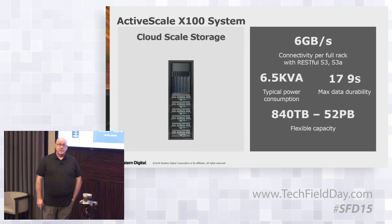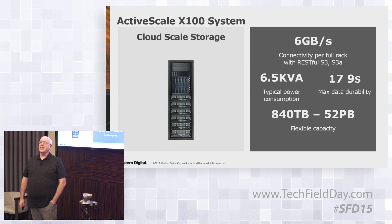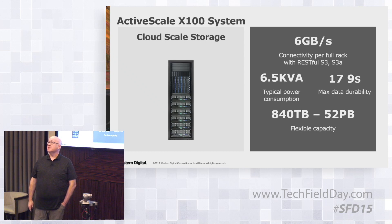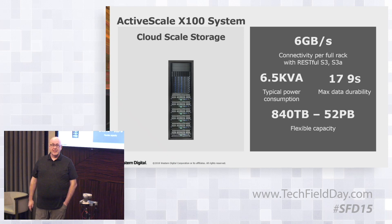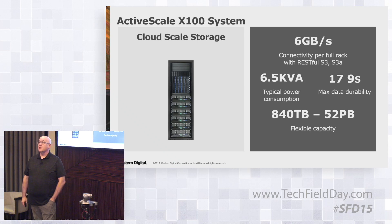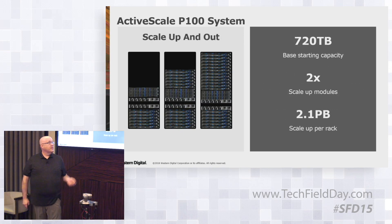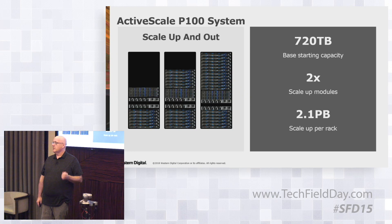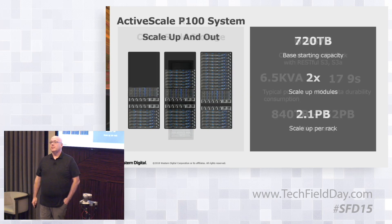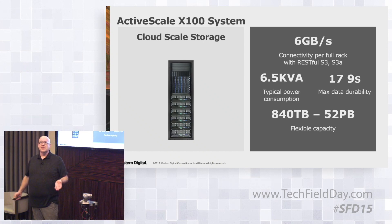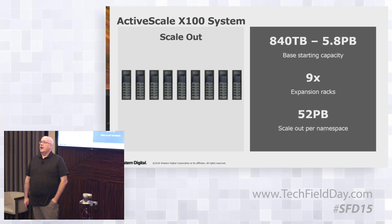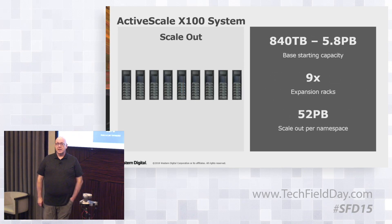The X100 is our big system — a 42U rack with 588 drives at 12 terabytes each, so its raw storage is about 5.7–5.8 petabytes. This will scale to 52 petabytes in a single namespace. It has the same basic data durability as the smaller system, obviously a lot more dense. However, it's not as performant as the P100 because there are six storage nodes doing erasure coding in the X100, compared to 18 storage nodes in the full P100 rack, which can sustain a lot more IO.